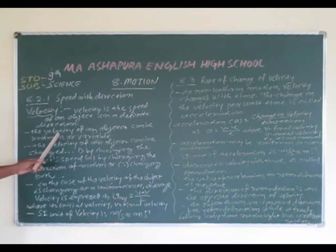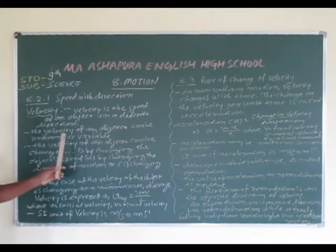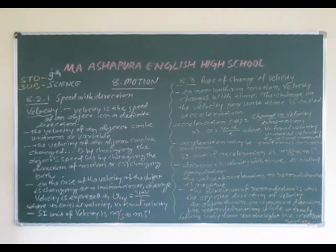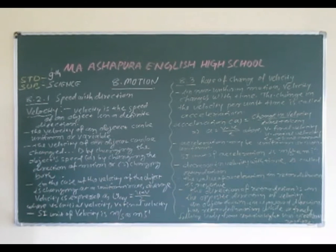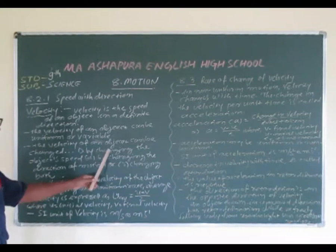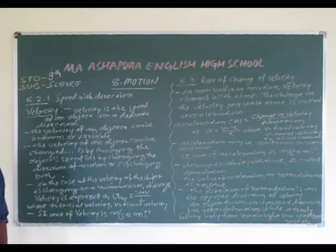The velocity of an object can be uniform or variable. Velocity dono tareeqe se mil sakti hai — yeh variable bhi ho sakti hai aur uniform bhi ho sakti hai. The velocity of an object can be changed. First, by changing the object's speed — object ki speed change hone ki wajah se.